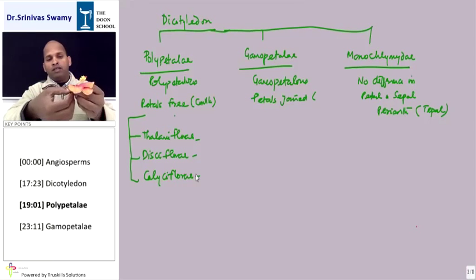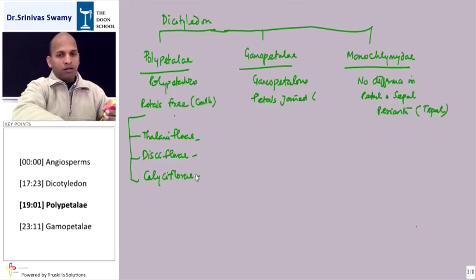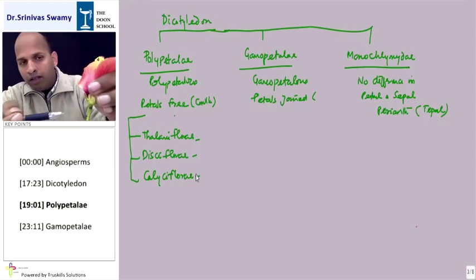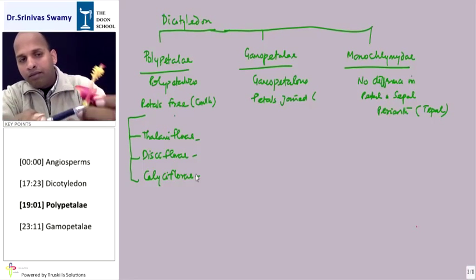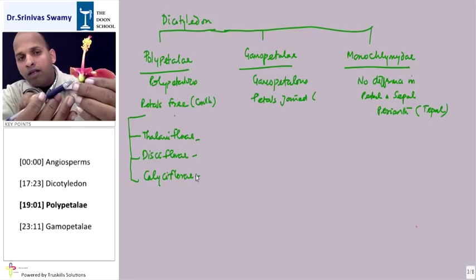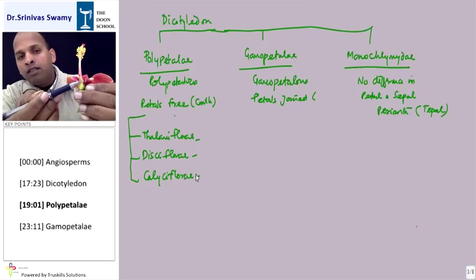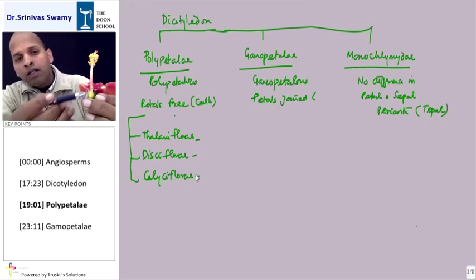If you look at it very closely, what can be seen here is that this particular part is the style. Inside this, you can notice this particular line - that is the style, and this is the ovary. Ovary contains the ovules in it.